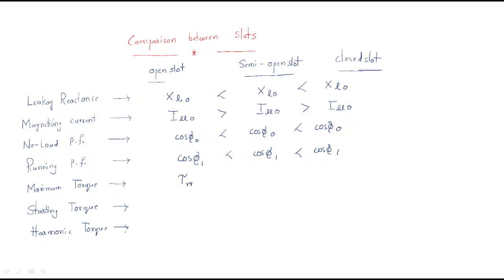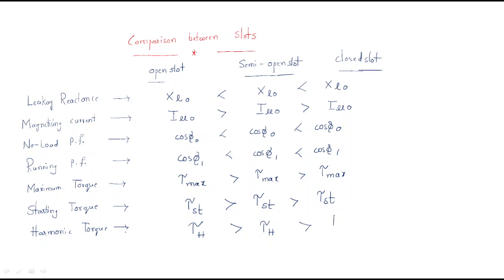Maximum torque is inversely related: open type slot has the most maximum torque, compared with semi-open, compared with closed — which has the least. Starting torque follows the same pattern: open type slot has the most starting torque, then semi-open, then closed type has the least. Harmonic torque: for open type slots flux distribution is non-uniform, so harmonic torque is high. It decreases from open to semi-open to closed type slots.